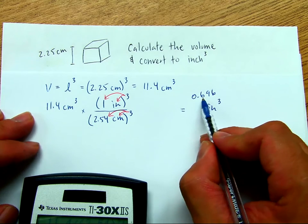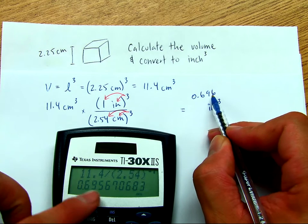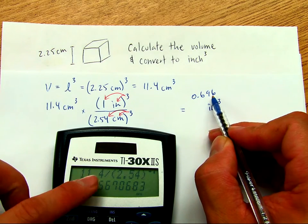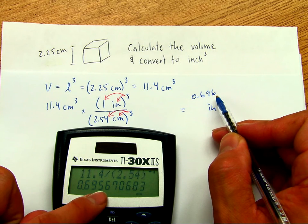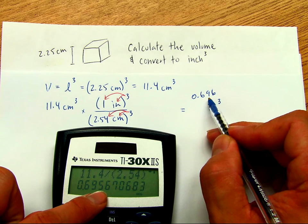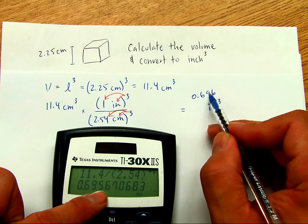It was 0.69567, but you only want 3 sig figs. So, since this was a 5, you round up to 0.696.